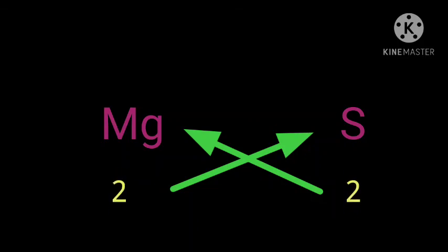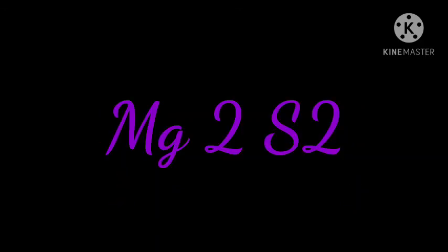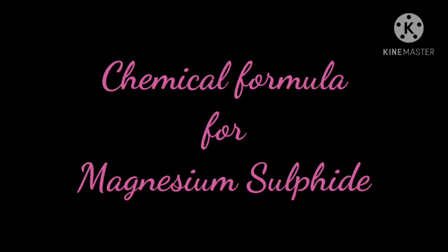Fourth, after crossing over the valencies, the chemical formula that is obtained is Mg2S2. Since the valencies are divisible by 2, so we will divide the valencies of both the elements by 2. Thus, the chemical formula of magnesium sulfide will be MgS.